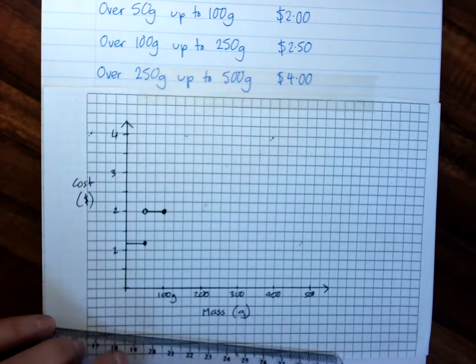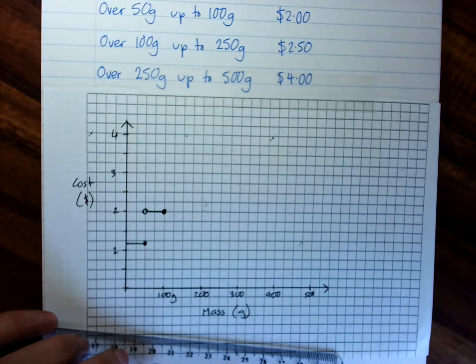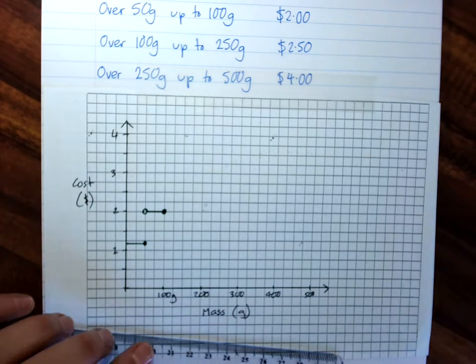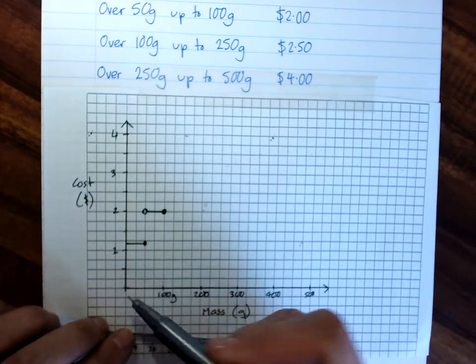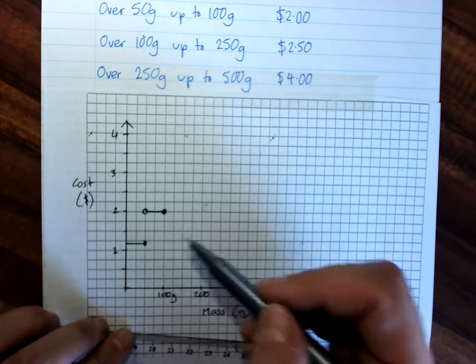The open circle, or the closed circle, indicates where we're starting, where our x value is considered to belong.